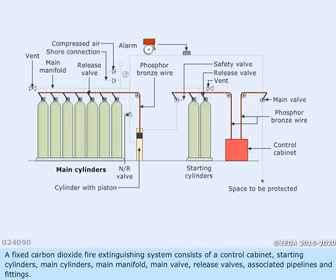A fixed carbon dioxide fire extinguishing system consists of a control cabinet, starting cylinders, main cylinders, main manifold, main valve, release valves, associated pipelines, and fittings.